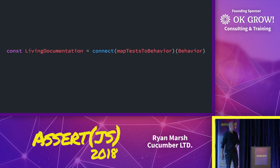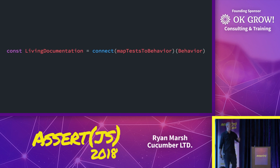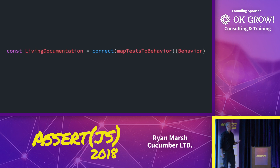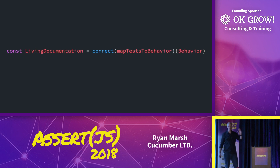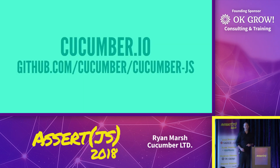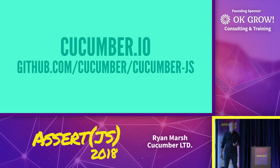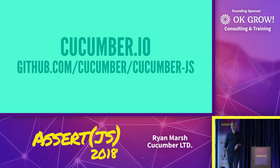If you're a React developer, you probably would rather interpret it like this: living documentation is a higher order component of connecting map tests to behavior. For those who want to go look at it, cucumber.io or github.com/cucumber/cucumber.js.